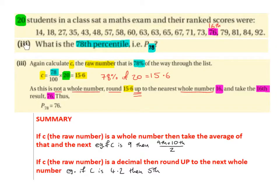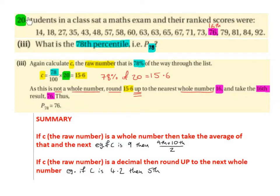Part 3. What is the 78th percentile, i.e., P78? Again, calculate C, the raw number, that is 78% of the way through the list. So C is 78 over 100 times 20, which is 15.6. So 78% of 20 is 15.6.